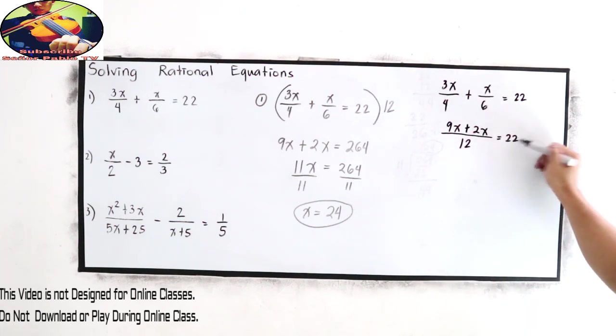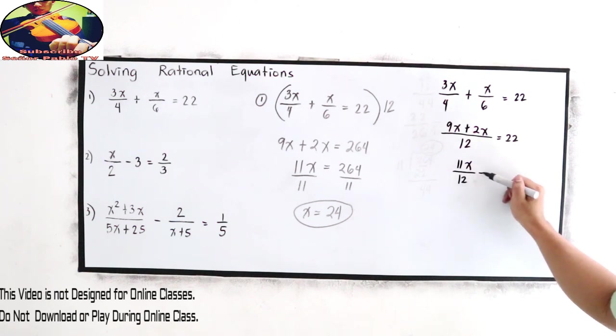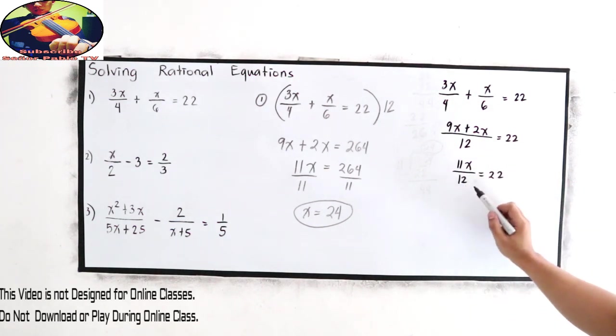This is equal to 22. Now simplify like terms. We'll get 11x over 12 is equal to 22. And now, cross-multiply.